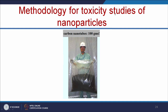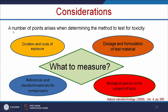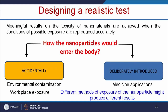Let us see the methodologies for studying the toxicity of nanoparticles. There are several points we must understand: what to measure, what duration, what is the route of exposure, what is the dosage and formulation of the test material, what kind of biological species to use, and whether there are standard reference materials for comparison. The main important thing is how to design a realistic test — meaningful results on toxicity are achieved when the conditions of possible exposure are reproduced accurately.